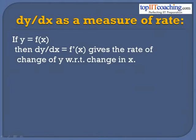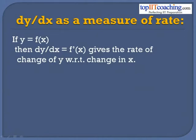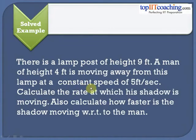Now let us see how the tool of differentiation helps us to calculate the rate of change of one quantity with respect to another. Let us see an example. There is a lamp post of height 9 feet. A man of height 4 feet is moving away from this lamp at a constant speed of 5 feet per second. Calculate the rate at which his shadow is moving.